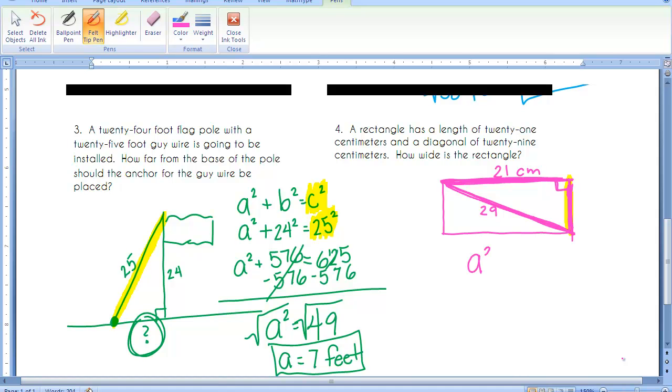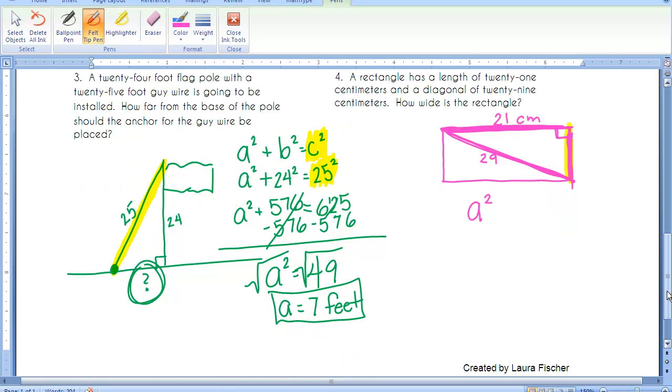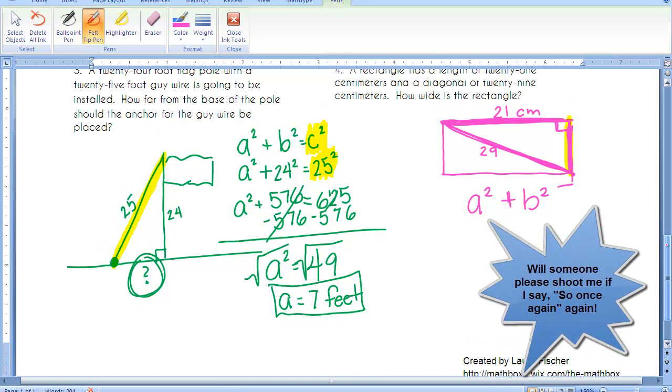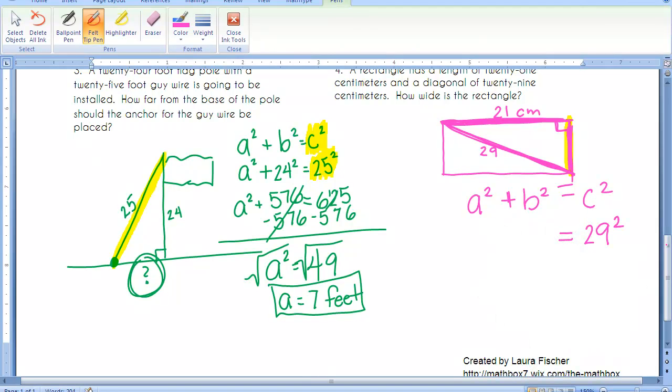And once again, because it is a right triangle, we're going to use the Pythagorean theorem: A squared plus B squared equals C squared. And once again, they've given us the hypotenuse. So I have to make sure I am sticking that 29 in the proper spot. It goes where the C is. And this time, I'll go ahead and put 21 squared in for the A. It does not matter with the legs. They are interchangeable. 21 squared, 21 times 21 is 441.